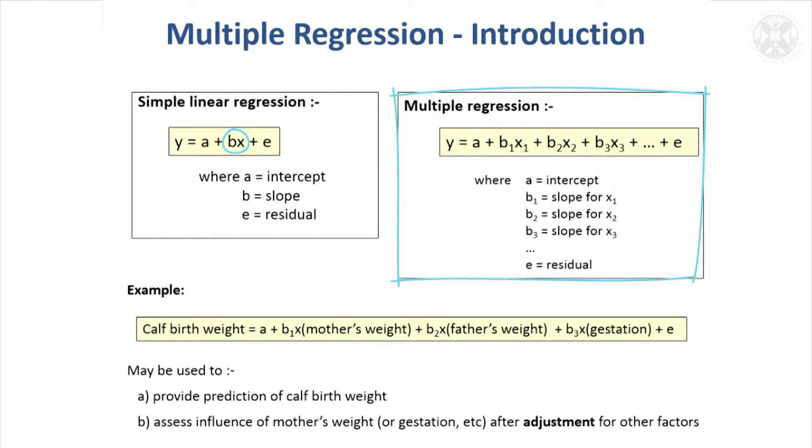You can try and predict something from several different values and have them all in the same equation. So you're now not just in two dimensions, you're in several dimensions, but you're still trying to get a straight line through the data.